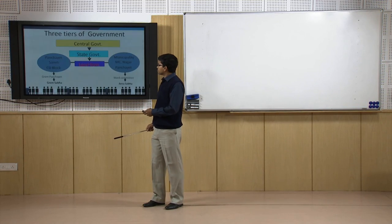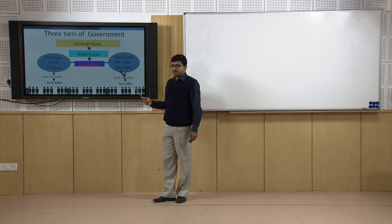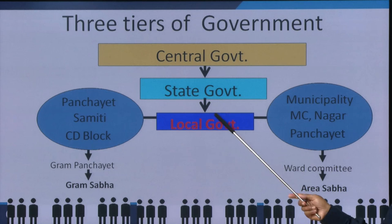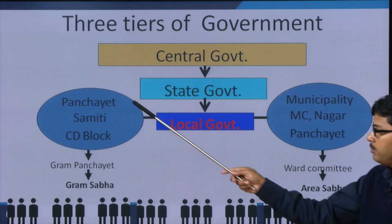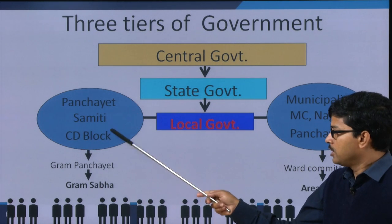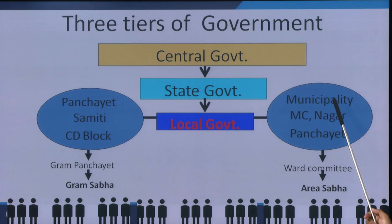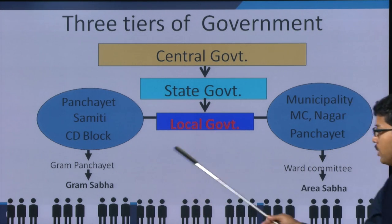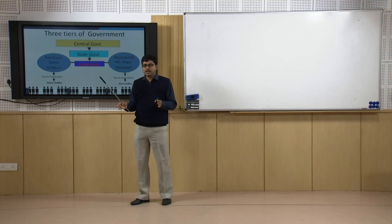Planning prescribes the specific needs for people for the future and it involves technical input as well as people's participation during the preparation phase. This slide shows that right now we have three tiers of governments: central government, state government, and local government. Under the local government paradigm, there are two sets: village-level bodies like Panchayat Samithi, Community Development Block, Gram Panchayat and Gram Sabha, and urban bodies like municipality, municipal corporation, Nagar Panchayat, ward committee, and area sabha. Our main objective is to concentrate on the local government level, which provides housing at the ground.